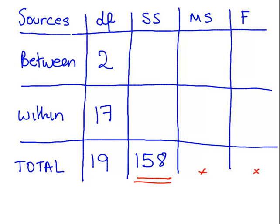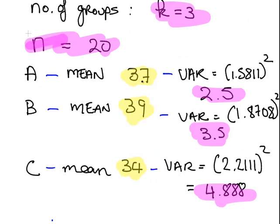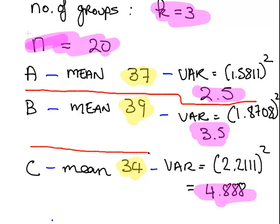And in the last presentation I was also able to calculate some important values here. The mean and variance for each of the subsamples. So the variance of group A is 2.5 and its mean is 37. The variance of group B is 3.5 and its mean is 39 and so on. So we are going to use all these values now in calculating the between groups sums of squares and within groups sums of squares.